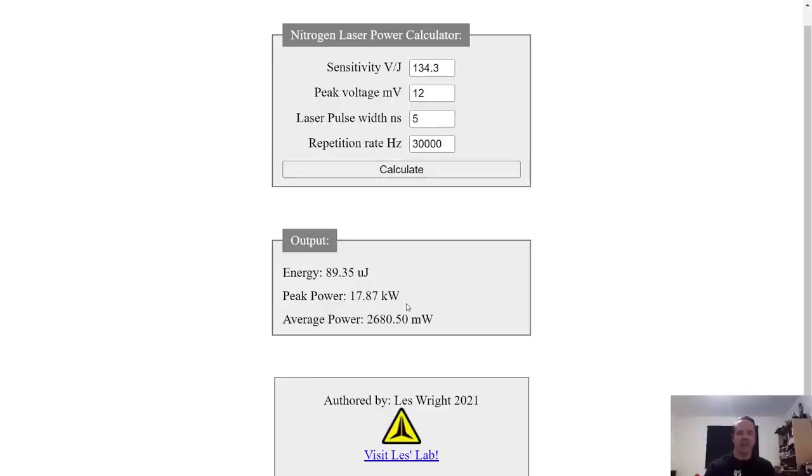There's all our figures. We've got an energy output here of 89 odd microjoules per pulse. Our peak power is above the rated specification of 15 kilowatts, we're actually at almost 18 kilowatts per pulse, so that's very nice indeed. And our average power once again is a little bit over spec. The quoted power was 2 watts and we've got an average power here, assuming that we run at 100% duty cycle, of about 2.7 watts, very nice indeed.